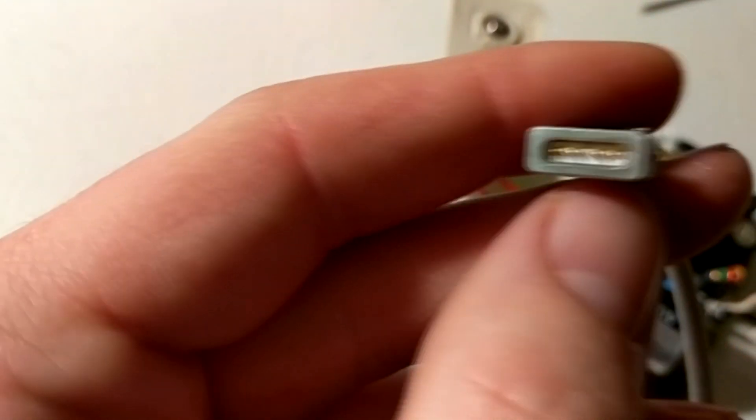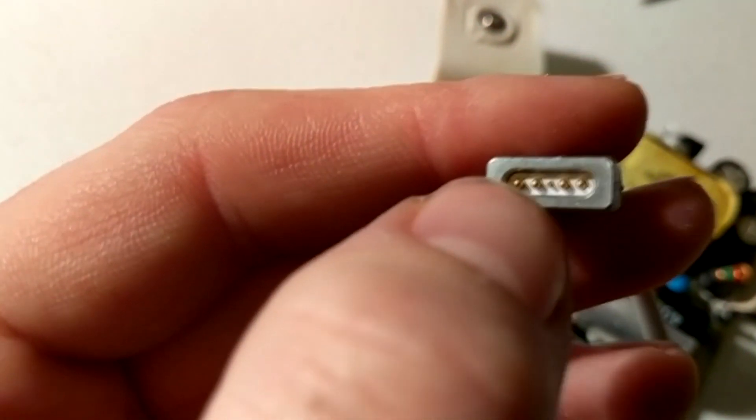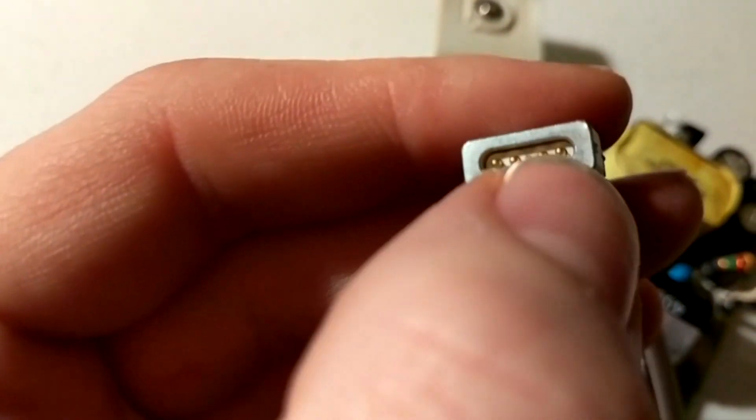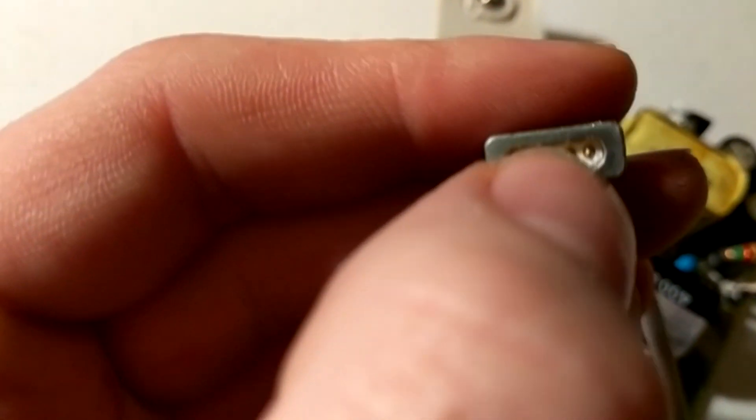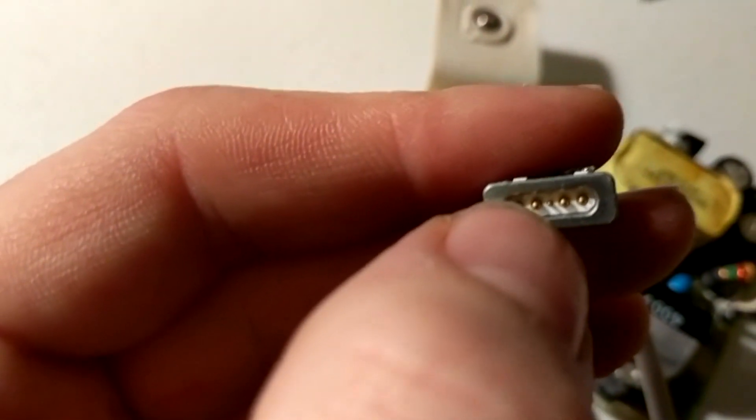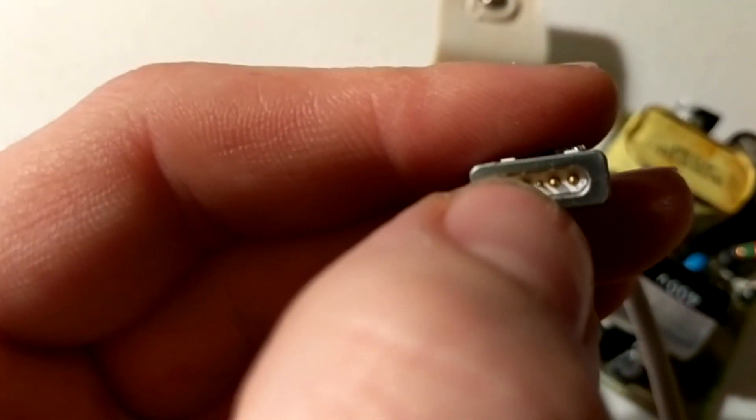So the two outer pins are actually grounds. The two second ones in are 16.5 volts. And then that center pin is the charge indicator pin.